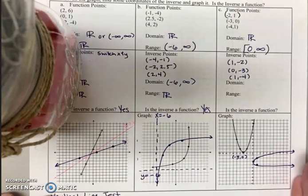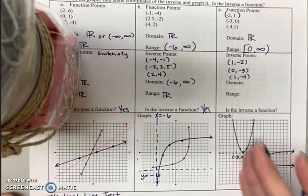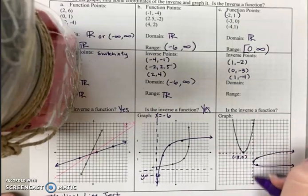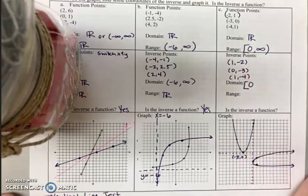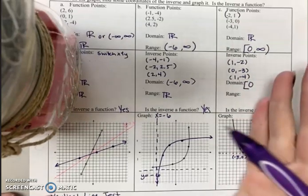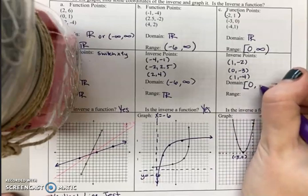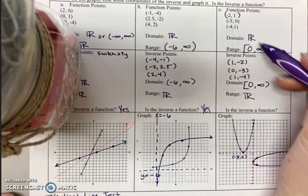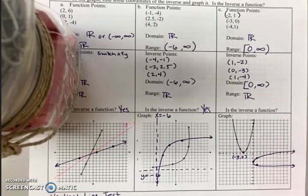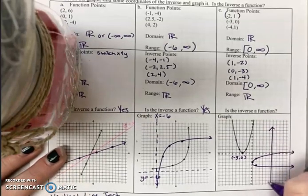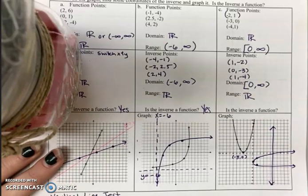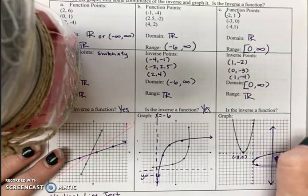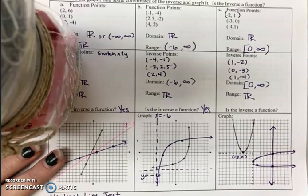The domain of this function, left to right, the furthest left it can go is the x value of zero. I'm going to put a bracket there because it is included, and then it goes right forever towards infinity. The range goes down forever and up forever, so all real numbers. Notice the domain and range basically just switch. Is this inverse a function? Does it pass the vertical line test? No, it does not. If I draw a vertical line here, you can see it crosses more than once.